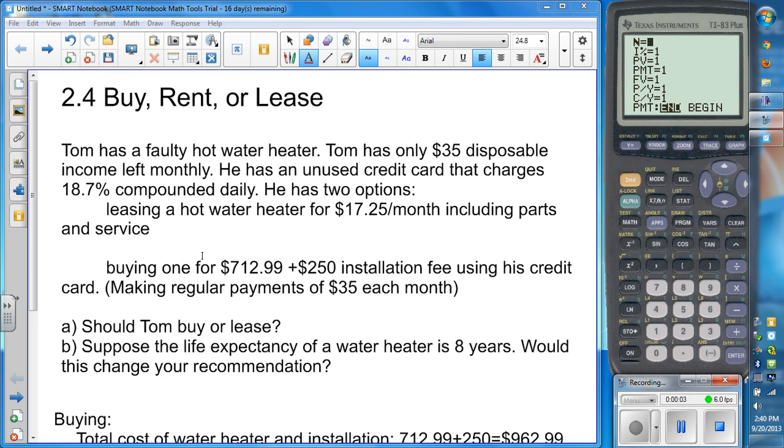Section 2.4 is titled Buy, Rent, or Lease. Let's look at an example. What you're going to do is figure out whether or not in certain situations these people should buy, rent, or lease various objects including water heaters, homes, whatever's in the question.